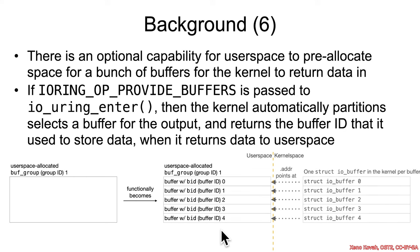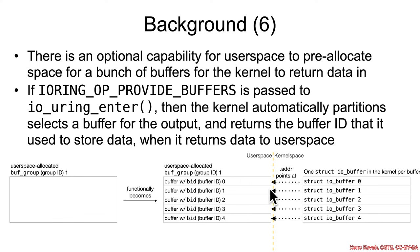Behind the scenes in kernel space, the kernel allocates one iou_buffer struct per slice of this larger buffer. This is how the kernel tracks where the first user space buffer is, the second, third, fourth, and so on. When you see references to iou_buffer structs in the code, the address field of that struct is the user space address signifying the beginning of a given buffer within this sliced-up larger buffer group.